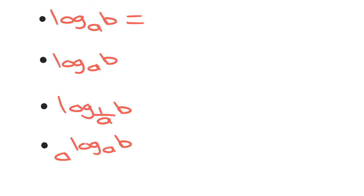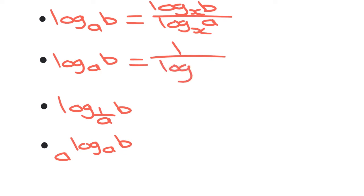So log number b base a, how can we rewrite that out? One way is to say that would be log b, let's say your base is x, over or divided by log a, and that would be base x. Another way of rewriting this out, another rule, is if you were to say this would be 1 over log, and then you just switch your number and your base around. So now it would be a base b.